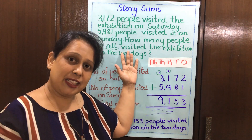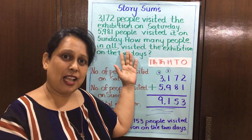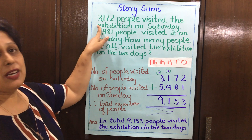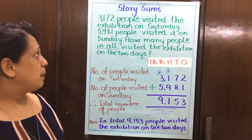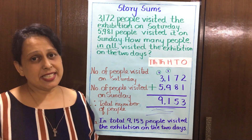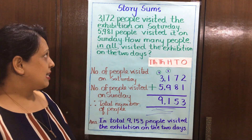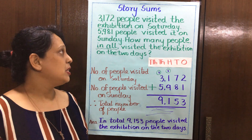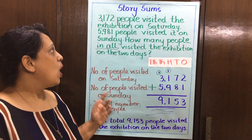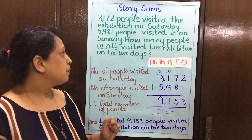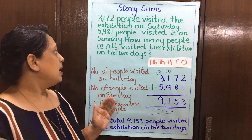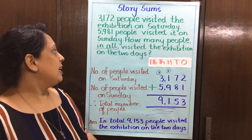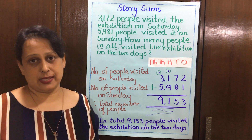Now let's read this story sum given. 3,172 people visited the exhibition on Saturday. 5,981 people visited it on Sunday. How many people in all visited the exhibition on the two days?